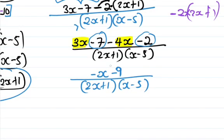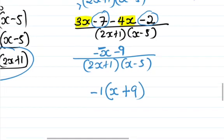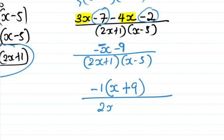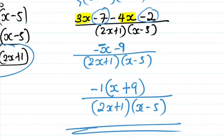We need to factor the numerator. There is something in common — we can take out negative one. Taking out negative one from negative x minus 9 gives negative one times (x plus 9). So the final answer is negative (x plus 9) divided by (2x plus 1)(x minus 5). And that's how you simplify it as a single fraction.